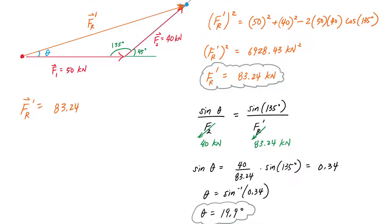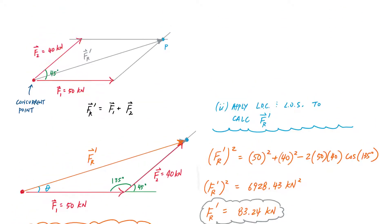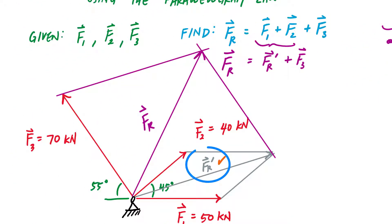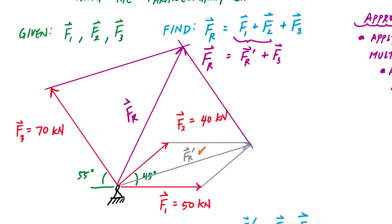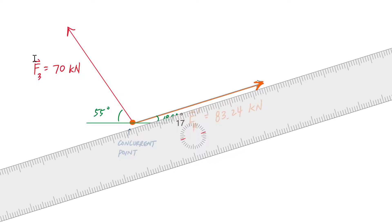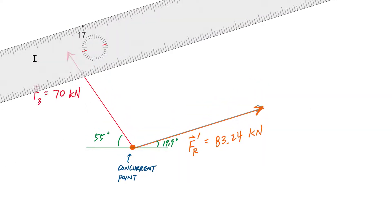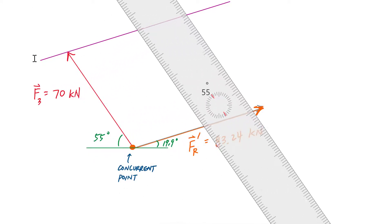So FR prime is 83.24 kilonewtons at 19.9 degrees from the horizontal. Now I go back to the overall system and add FR prime plus F3 to get the total resultant FR. I sketch another parallelogram: FR prime and F3 at the concurrent point, then draw a line parallel to FR prime at the head of F3, and a line parallel to F3 at the head of FR prime.